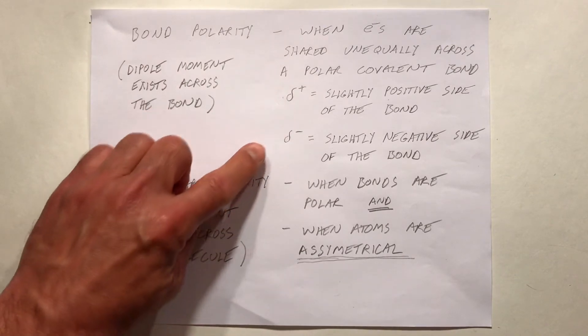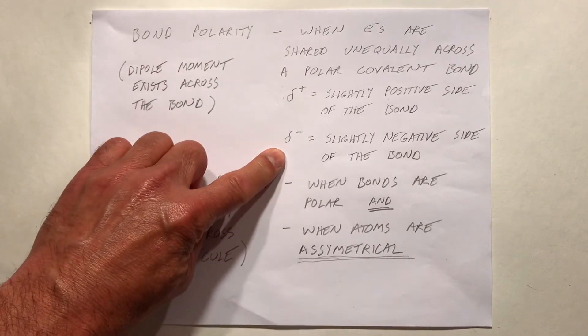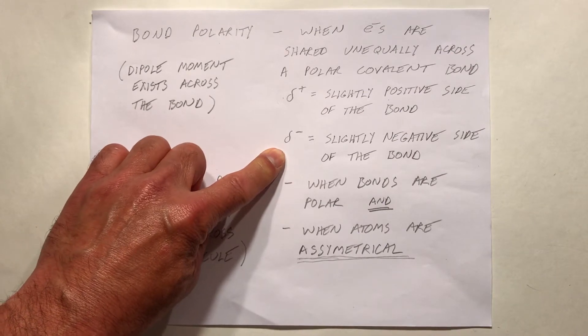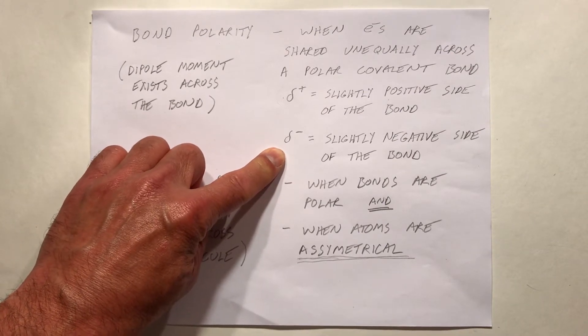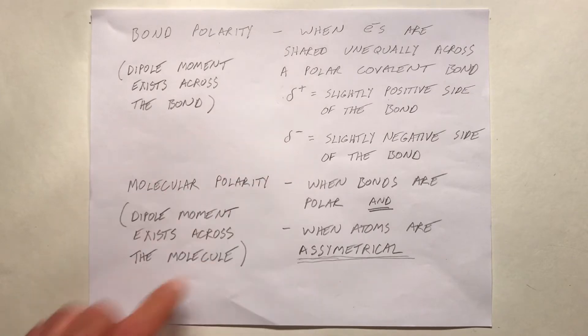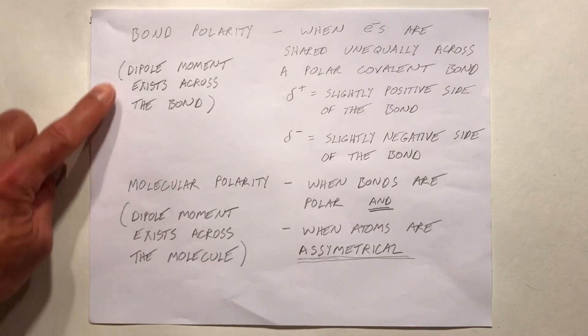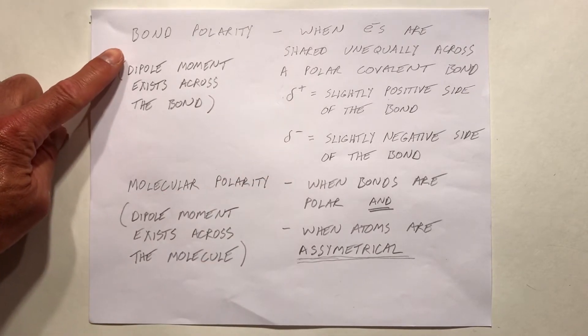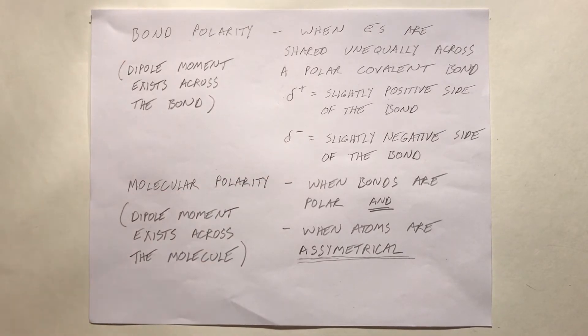And a slightly negative side to the other side of the bond, indicated by a delta minus, or a negative dipole. This is when we have uneven distribution of electrons across the bond.